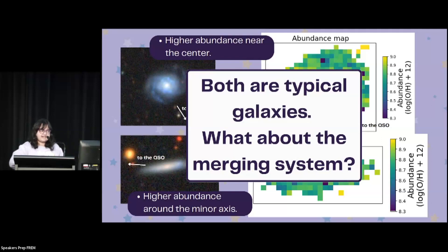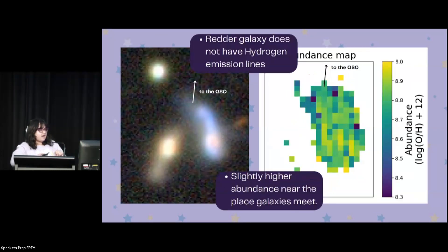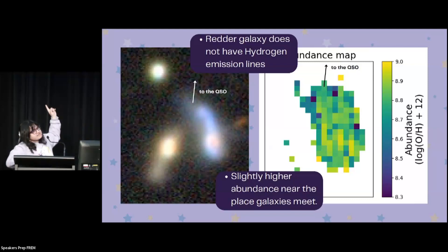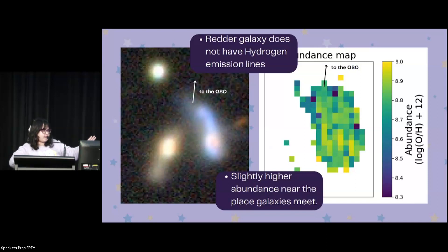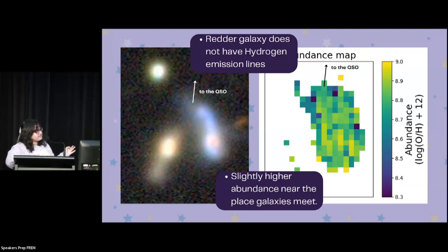So both of these are very typical galaxies. What about the merging system? Here is a velocity map, and we can see that the galaxies are co-rotating — very standard. I also made an abundance map. The redder galaxy in the merging system does not have any hydrogen emission lines, which meant that I couldn't calculate its abundance. We believe this is because in the earlier stages of the merging, the bluer galaxy consumed all of the gas from the redder galaxy. We also see slightly higher abundance near the place where the galaxies meet, which is something we would expect in the case of a merger.